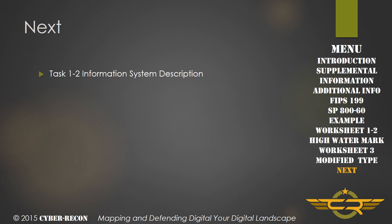Categorizing the information system's high watermark is an important step in developing the foundation for the security plan for the information system. It's actually the first thing really added to the security plan, and it sets the baseline for the controls that will be added and developed during the system's lifecycle. This task is followed by Task 1-2, information system description, where we start really building the SSP.